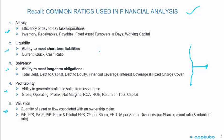Looking at credit analysis and the ability to service debt, we'd sometimes look at liquidity ratios — the ability to meet short-term liabilities — including the current ratio, quick ratio, and cash ratio. More importantly, we'd look at solvency ratios, which measure the ability to meet long-term obligations: total debt, debt-to-capital, debt-to-equity, financial leverage, and then the coverage ratios — interest coverage and fixed-charge coverage ratios.